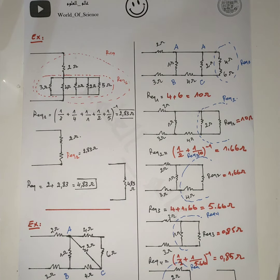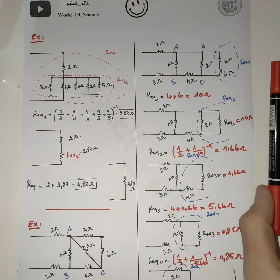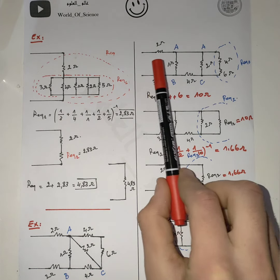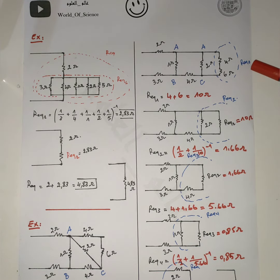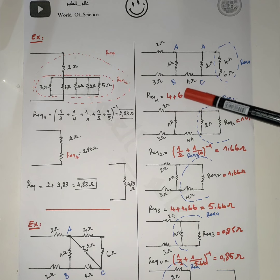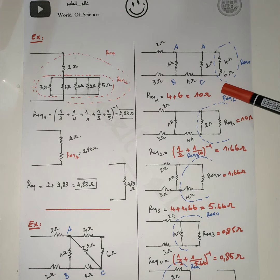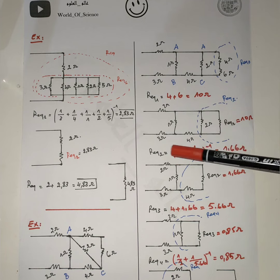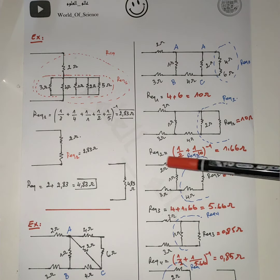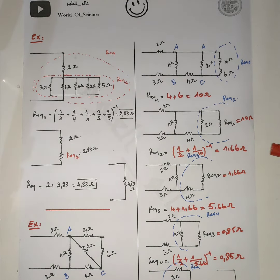We should find R equivalent from right to left. R equivalent 1: these two resistors are in series with each other, so R equivalent 1 equals 4 plus 6, which equals 10 ohm. Replace this with 10 ohm; then R equivalent 1 and 2 are in parallel to each other, giving R equivalent 2 equal to (1 over 2 plus 1 over 10) to the power of minus 1, which equals 1.66 ohm.